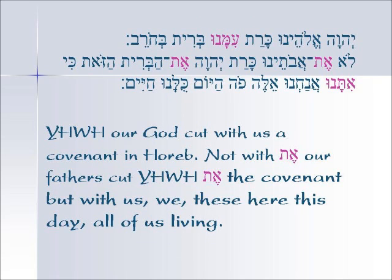Here we have a verse from Deuteronomy 5:2 and 3, to show the use of Im together and also the two uses of the Aleph Tav — where one means the direct object marker and the other means 'with.' In the first verse, Deuteronomy 5:2: 'Yahweh Eloheinu Karat' — cut — 'Imanu' — with us — a covenant in Horeb. So here it is clearly 'with': he cut the covenant with us, Imanu.